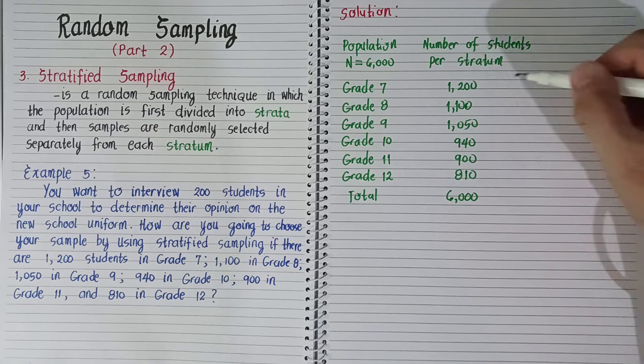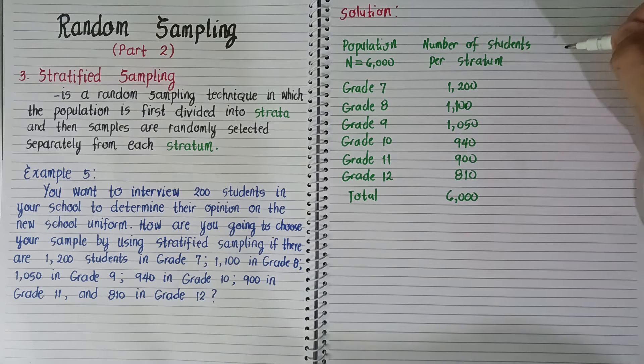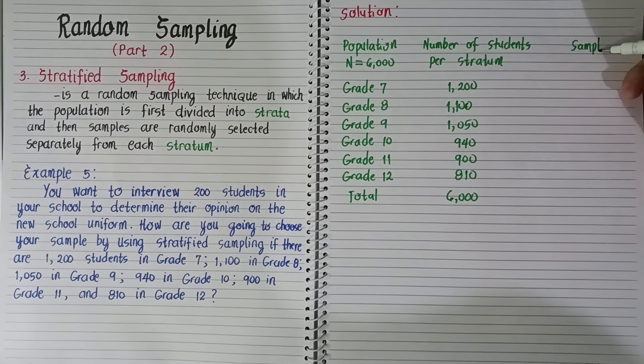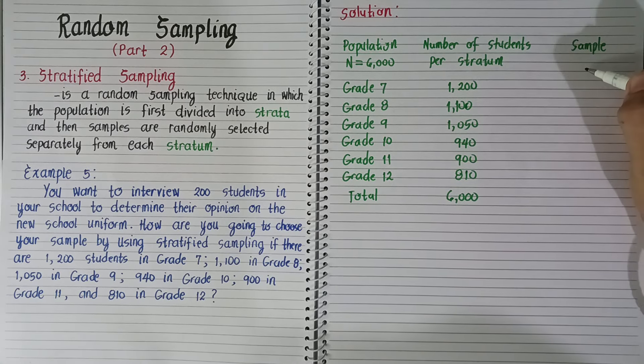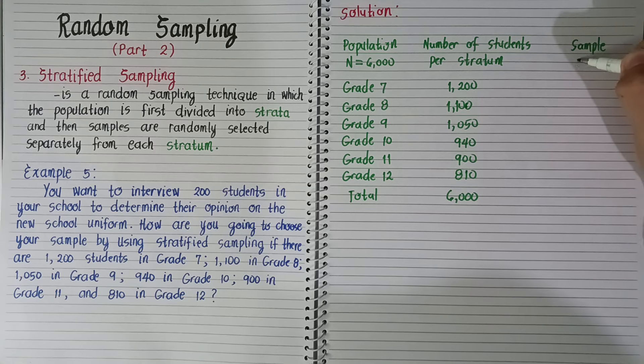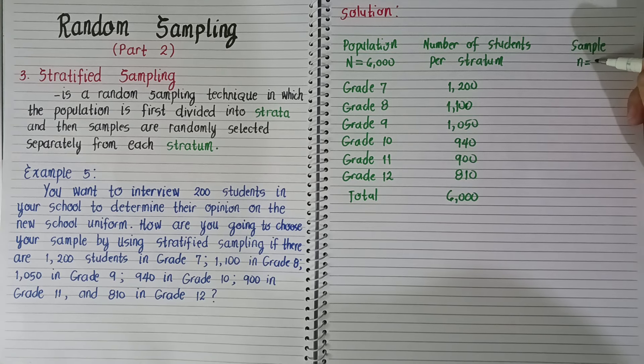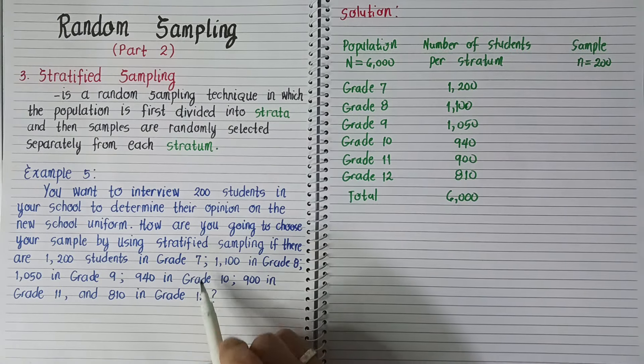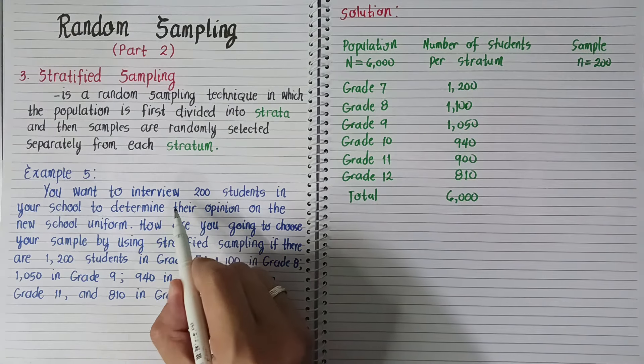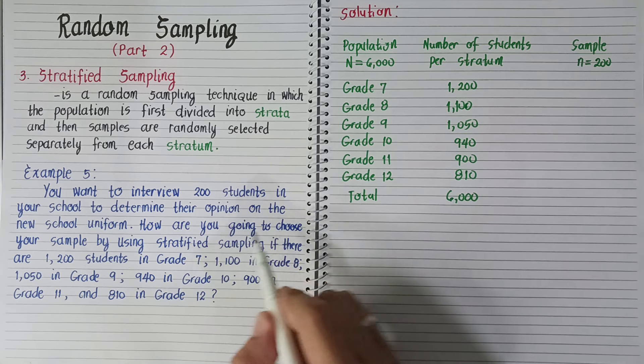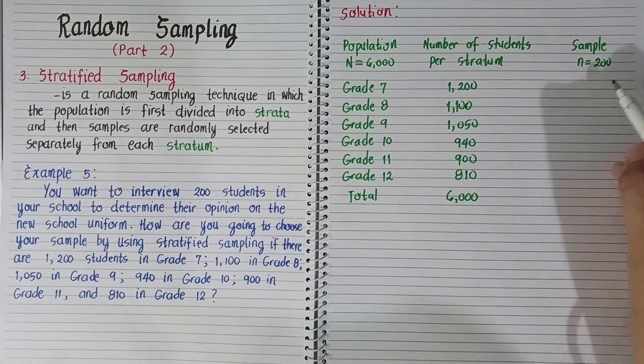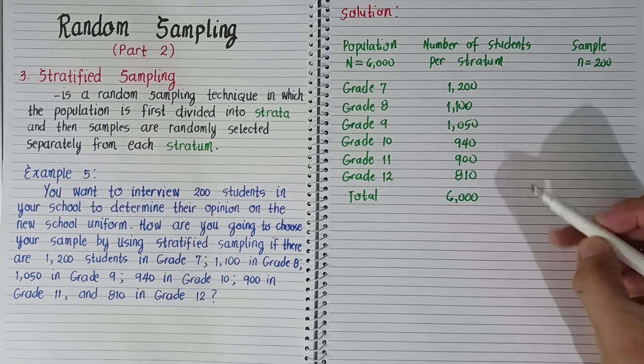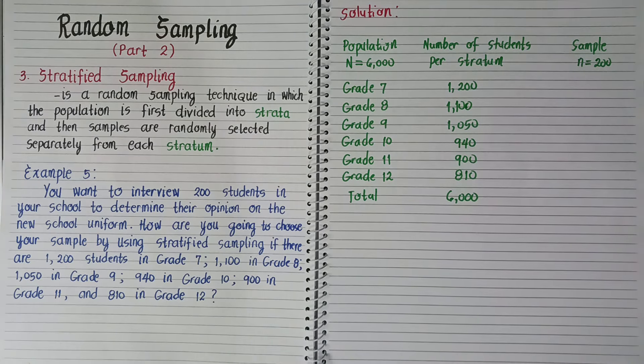How do we select our sample? This is called the sample. We have small n equals 200 only. Because the problem says you want to interview 200 students in your school to determine their opinion. So we'll take 200 participants only out of 6,000.